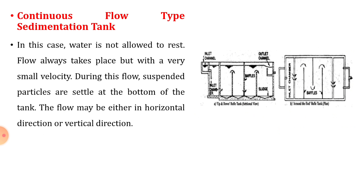Then continuous flow type sedimentation tank. On the contrary, here the flow, as the name suggests, is continuous. In this case, water is not allowed to rest as in the fill and draw type. Flow always takes place but with a very small velocity. During this flow, the suspended particles are settled at the bottom of the tank. The flow may be either in the horizontal direction or vertical direction. As shown in the figure, baffles are provided, which are responsible for the reduction in velocity, so sufficient sedimentation or settling can be achieved, and the settled sludge is taken out and discharged from the tank.